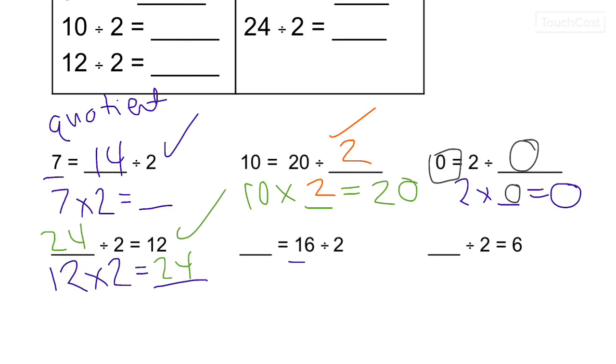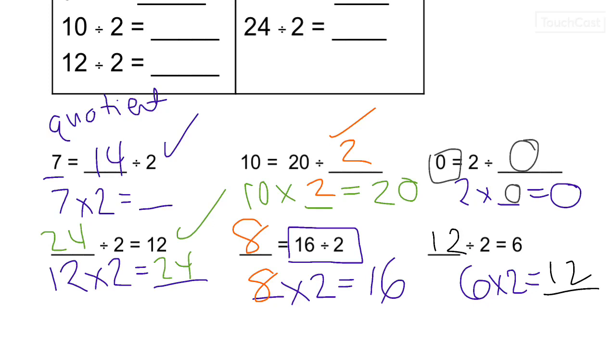This one is just 16 divided by 2. So what times 2 gives me 16? 2, 4, 6, 8, 10, 12, 14, 16. 8. And the last one. Something divided by 2 gives us 6. So flip it. What's 6 times 2? 12. Is 12 divided by 2 equal to 6? Yes. So you see how we use multiplication to help us, but we checked all of our answers once we got our answers. We checked it to make sure it made sense. If it didn't make sense, we'd have to do something different.